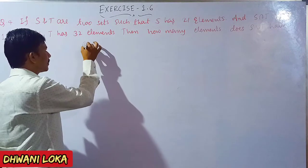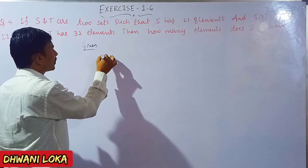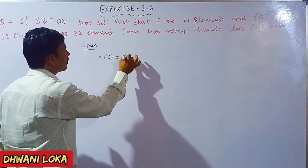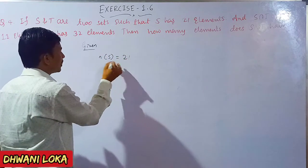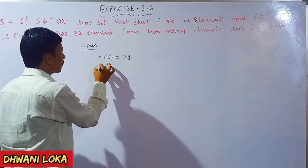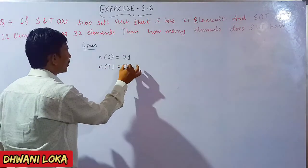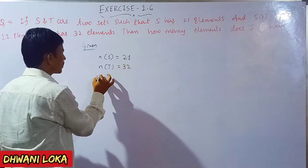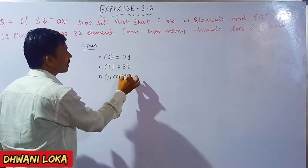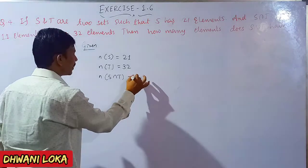Question number 4: If S and T are two sets such that S has 21 elements, T has 32 elements, and S intersection T has 11 elements, then how many elements does S union T have? Given: N of S is equal to 21, N of T is equal to 32, N of S intersection T is equal to 11.